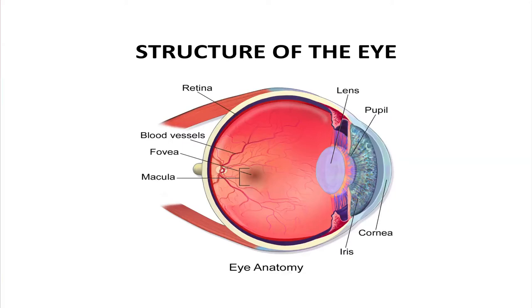Light rays enter the eye through the cornea — the transparent covering in front of the eye. The cornea is sharply curved and focuses the light rays on the retina. Behind the cornea is the pupil, which appears black. The amount of light entering the pupil is regulated by the iris — a ring of muscle whose pigmentation gives the eye its color, such as brown or blue. The iris contracts and dilates reflexively, regulating the amount of light that reaches the retina in accordance with brightness conditions outside, and also allows the eye to adapt as light levels change.